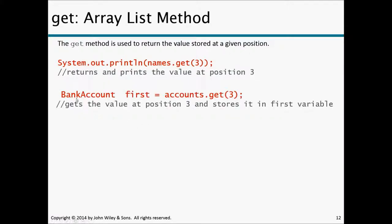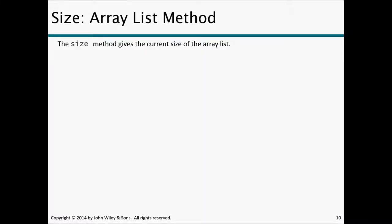Another example using a BankAccount class created in Chapter 3: to get the bank account at index 3, write: BankAccount first = accounts.get(3). This retrieves the account at index 3 and stores it in a variable called 'first' of type BankAccount.